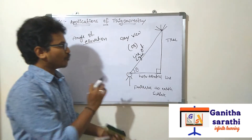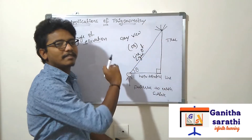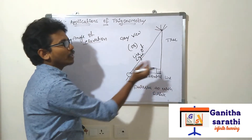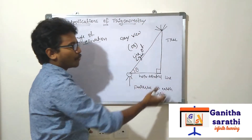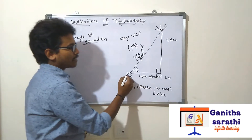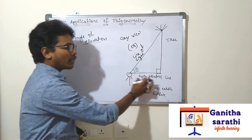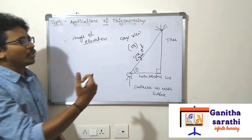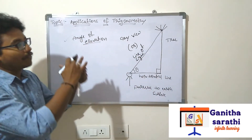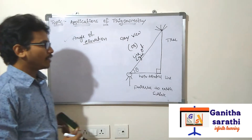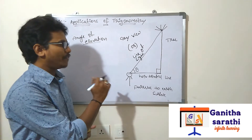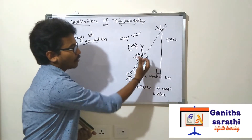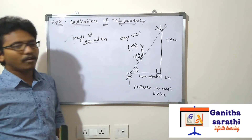What is line of sight? The position from the observer's eye to the point where the observer is seeing is called line of sight. What is the horizontal line? The position from the observer to the base of the tree, tower, building — anything — parallel to the earth surface, that is called the horizontal line. Above the horizontal line is called angle of elevation.